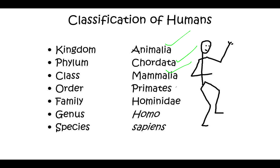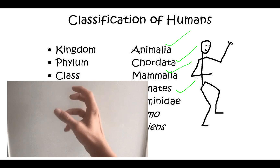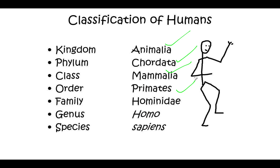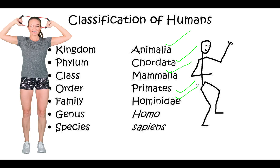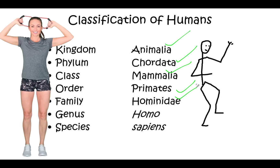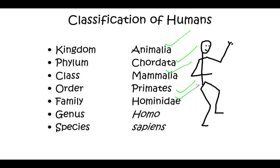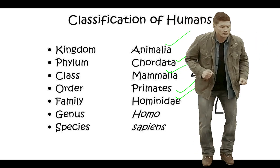The order we belong to is Primates because we are mammals with a collarbone, our eyes face forward, we have hands that grasp with fingers, and we have two types of teeth — incisors and molars. We belong to the family Hominidae because we are primates with upright posture, a large brain, stereoscopic vision, a flat face, and different uses for our hands and feet.